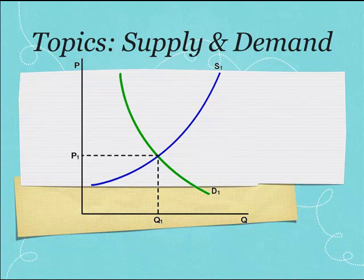When supply changes, the entire line shifts right or left. When quantity supplied changes, there is a movement along the supply line.